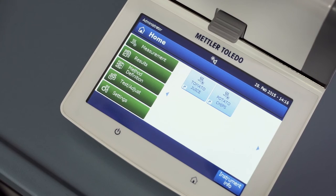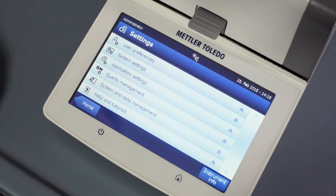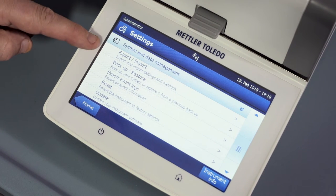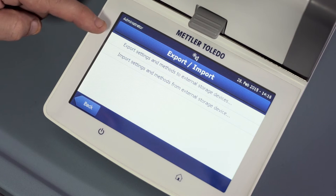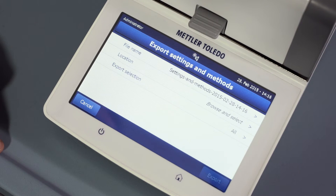To do this, go to settings, system and data management, and their export import, and select export settings and methods to external storage devices.